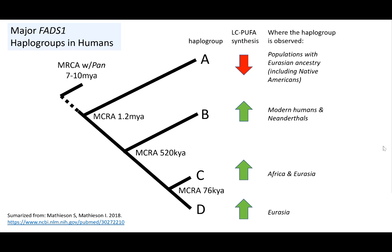I want to draw your attention to haplogroup A. This haplogroup is associated with a decrease in the synthesis of long-chain fatty acids from short-chain fatty acids. This haplogroup is seen at high frequencies in people of some specific Eurasian ancestry and Native Americans. Let's look at a distribution map.